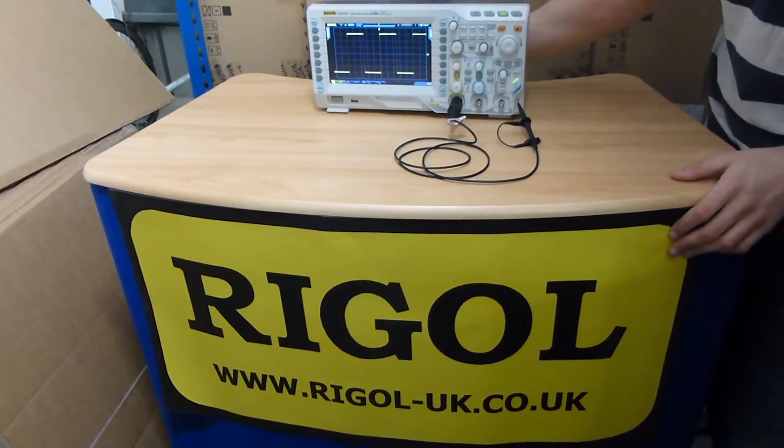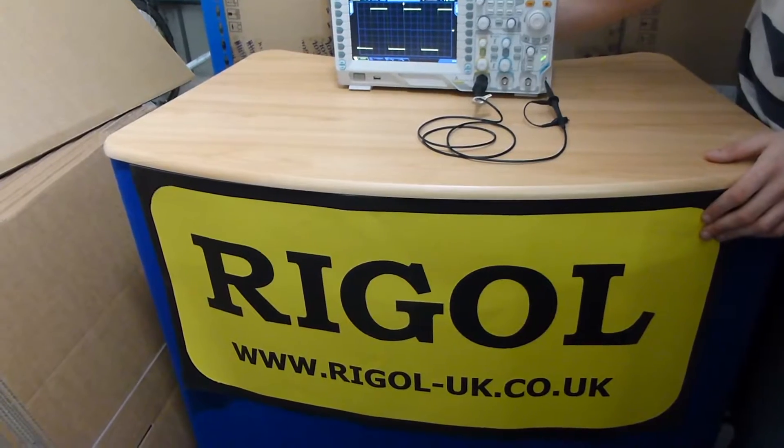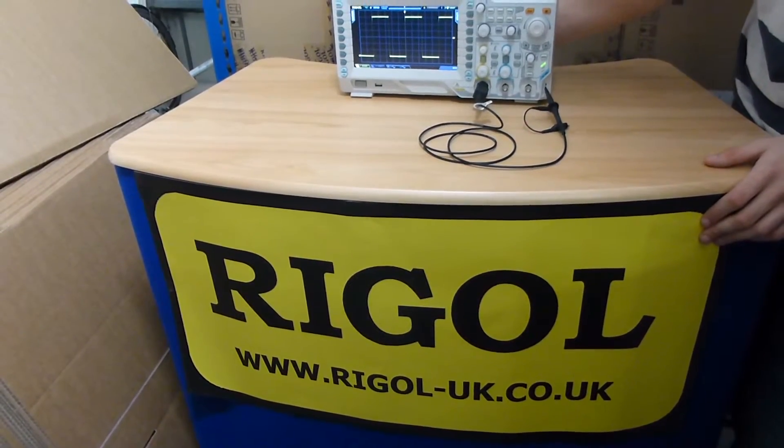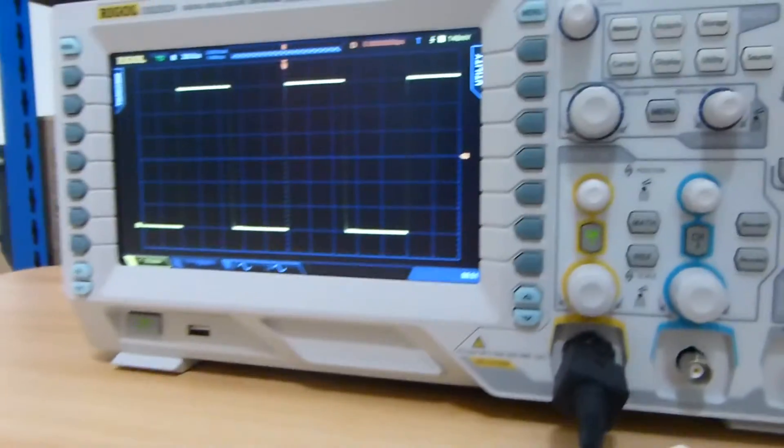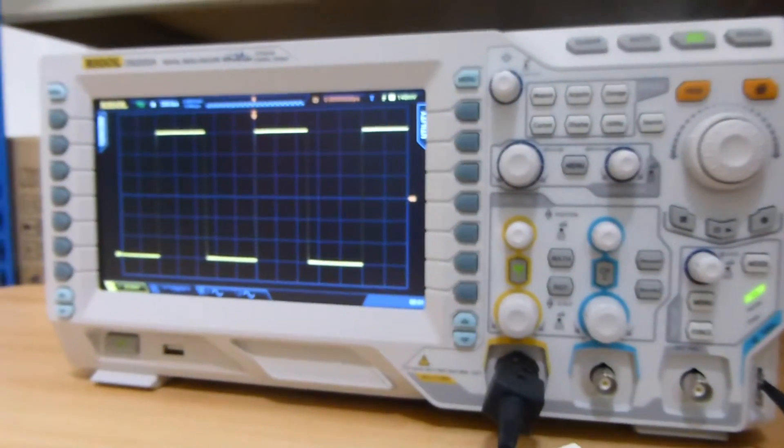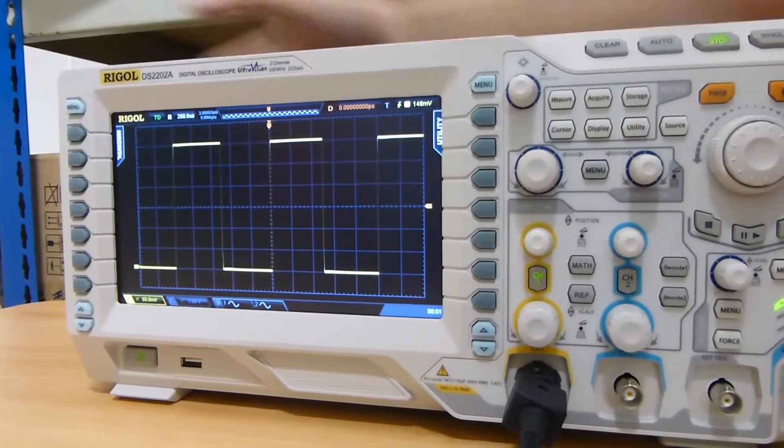This is a quick video on the menu functions on the Rigol DS2202A oscilloscope. The first menu we have is the horizontal menu.